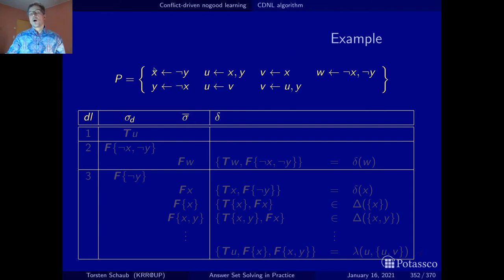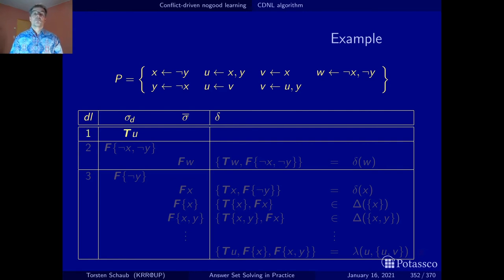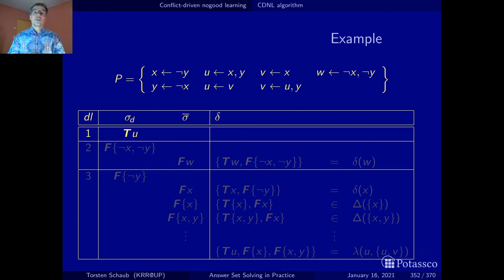Looking at the program, there are no facts, so we can't really propagate anything at the outset. We have to start with a choice: let's make u true. u appears in the head of rules, but making u true doesn't give us big derivations since it could be this rule or that rule — we don't know. So no further inferences are forthcoming and we do another choice, augmenting the decision level variable.